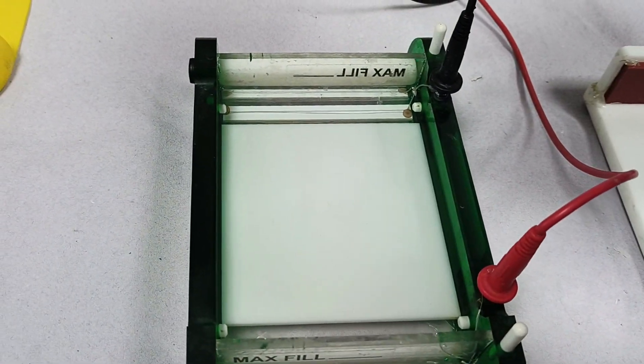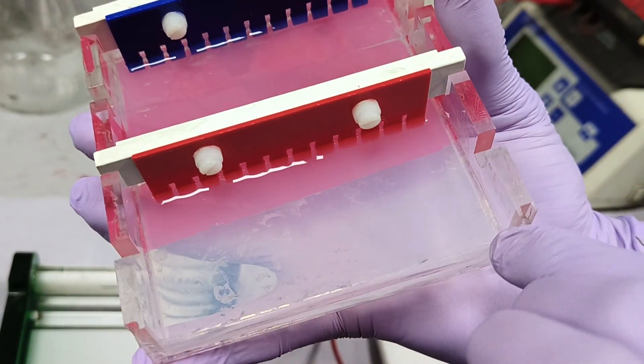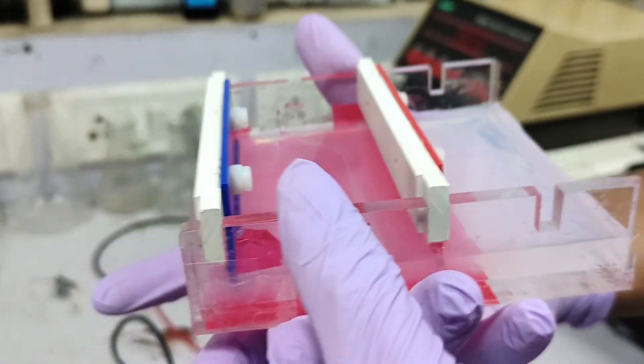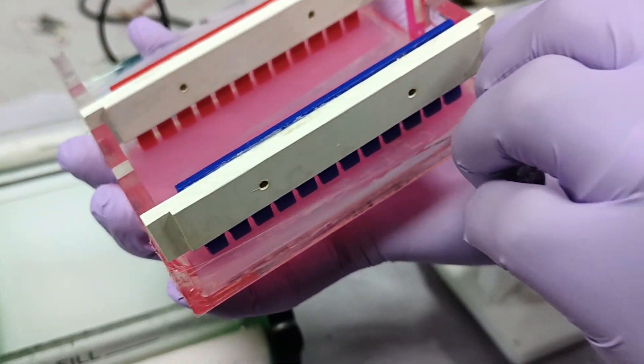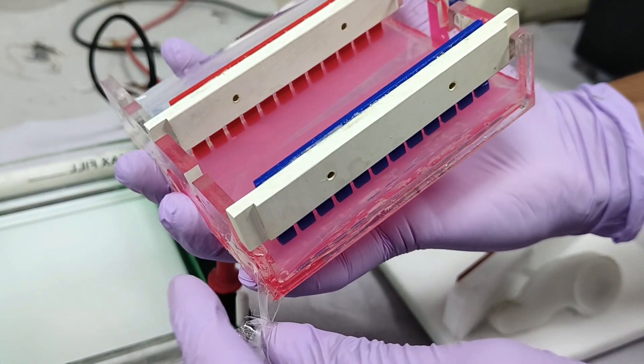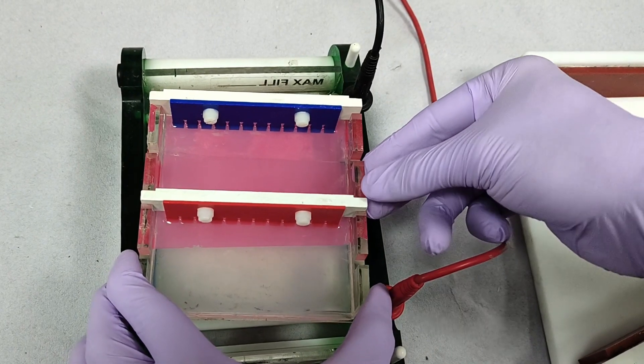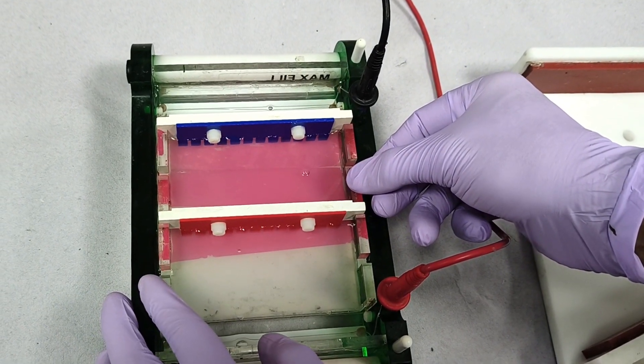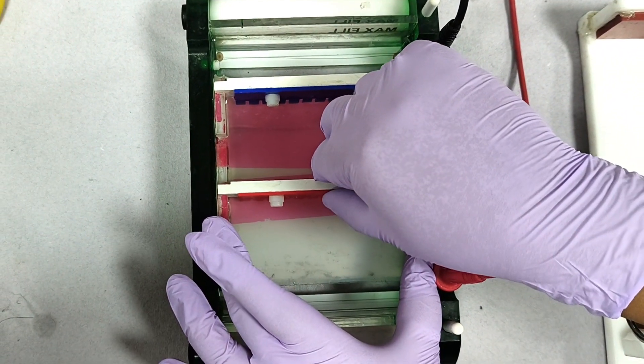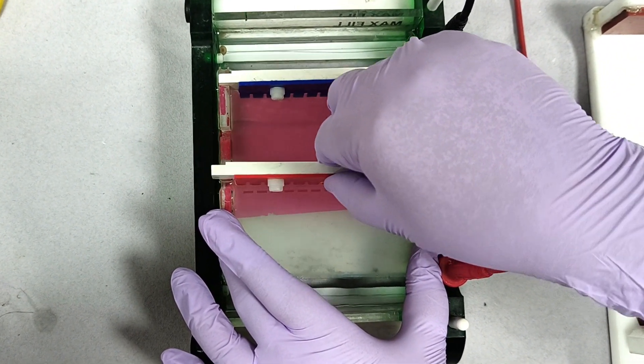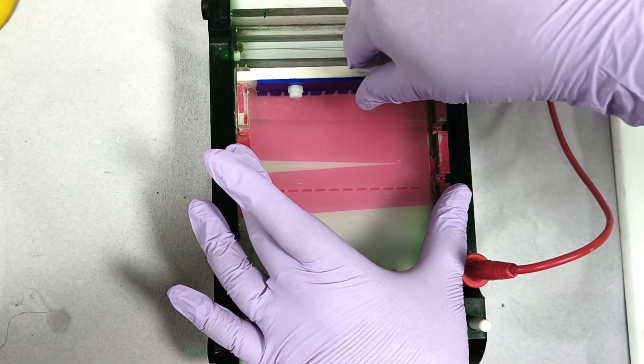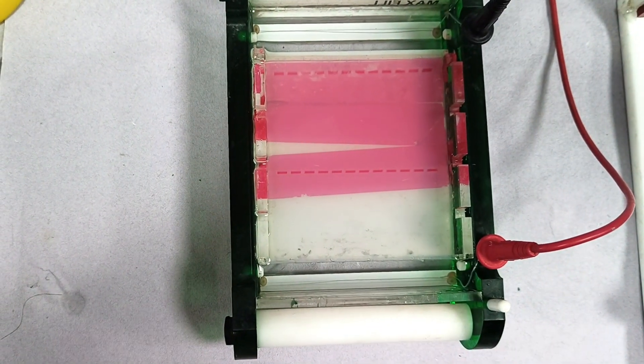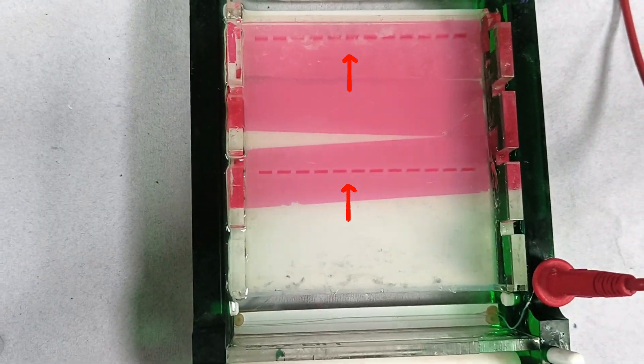Once the gel is solidified, remove the tape from both ends of the casting tray. Generally students forget to remove the tapes before running the gel, this may hamper their experiment. Now place the gel in the tank filled with 1X TAE buffer. The wells should always be near the negatively charged cathode and then carefully remove the combs to avoid any damage to the wells. This is how the wells look, as you see here the wells are formed nicely.